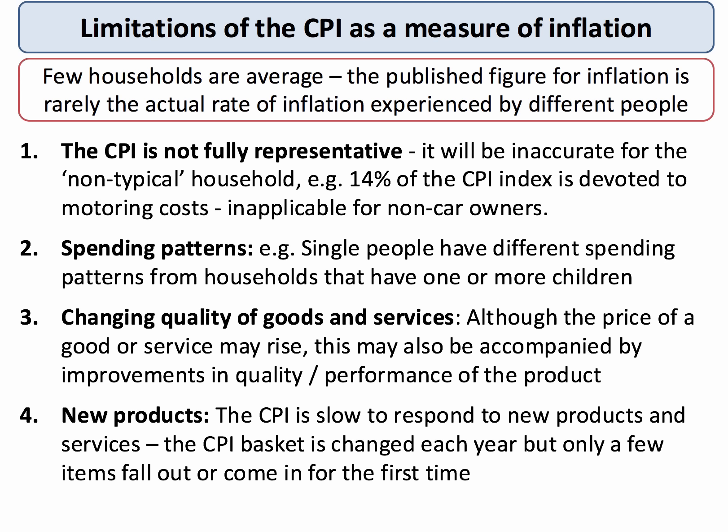Now CPI is the published measure of inflation, and it's significant to be aware of its limitations. When the inflation data is published — whatever it is, 0.5% or 0.7% — that's the inflation rate for the CPI as a whole. But of course nobody is really average.